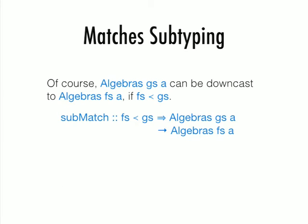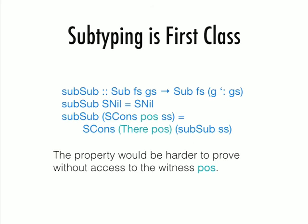We can also do something like this. Given a Gs algebra, if we know that Fs is a sublist of Gs, then it can certainly be downcasted to an Fs algebra by removing certain entries. This sub-match function also has a rather trivial definition. We can also prove useful things like this. For example, this sub-sub says that if Fs is a sublist of Gs, then it is also a sublist of G cons Gs. The proof is rather trivial, but it would be hard to do without this witness pos.